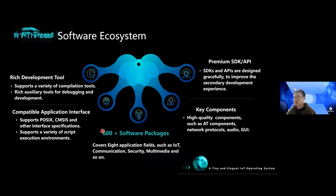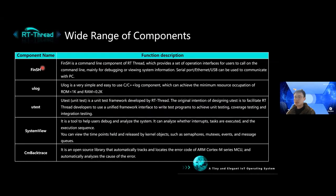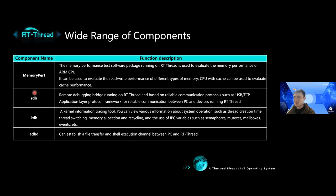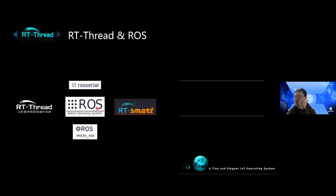As introduced before, there are over 600 software packages available in the software package center. The most popular components provided by RT-Thread include: command line interface (FinSH), microlog, microtest, SystemView, CrashBacktrace, memory performance analysis, RDB, KDB, and ADDR2LINE, to name a few. RT-Thread also supports the robot operating system, or ROS. If you are familiar with robotic applications, ROS is widely adopted in the development of robotic applications. Here is a short demo — I will introduce ROS using one of my previous projects. My research focuses on real-time adversarial attacks against learning models.